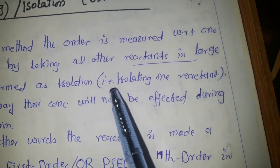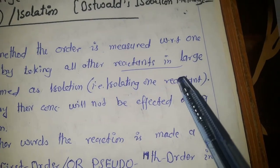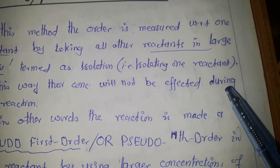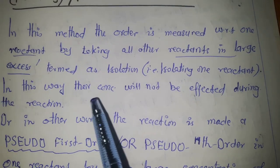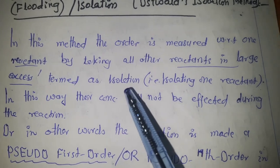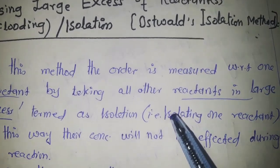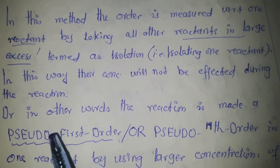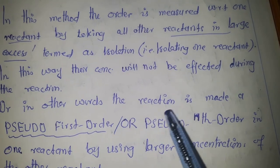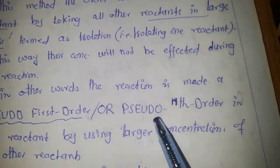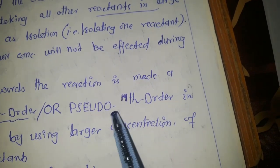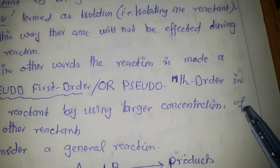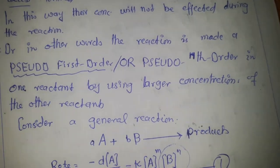It is termed isolation because we are isolating one reactant. In this way, the concentration of the other reactants will not change during the course of the chemical reaction. Those reactants taken in large excess have a concentration that virtually remains constant, making the reaction pseudo-first order or more generally pseudo-nth order in one reactant by using large excess of the other reactants.